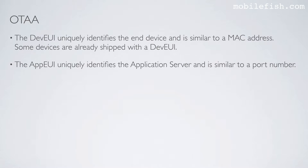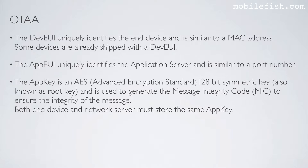The AppEUI uniquely identifies the application server and is similar to a port number. The AppKey is an AES — which stands for Advanced Encryption Standard — 128-bit symmetric key, also known as RootKey, and is used to generate the message integrity code to ensure the integrity of the message. Both ANT device and network server must store the same AppKey.